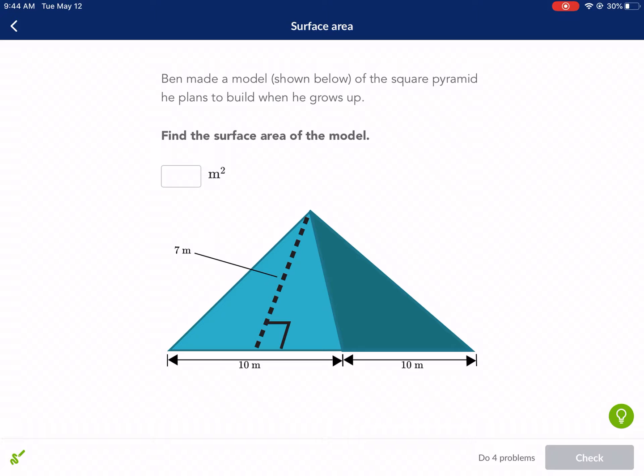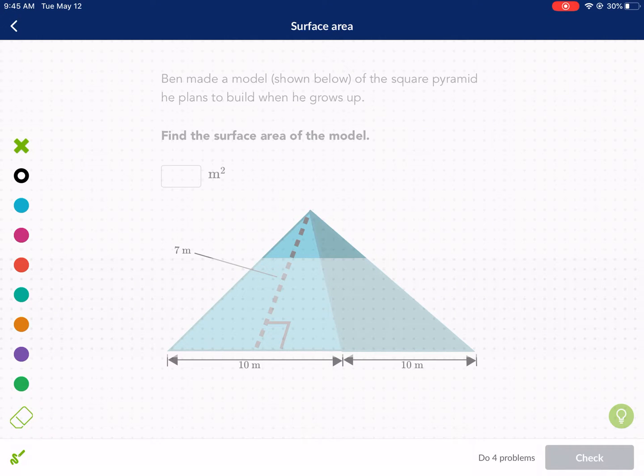It says Ben made a model shown below of the square pyramid he plans to build when he grows up. There's a lot of things wrong with that statement already. So why is Ben making a model and why does he want to build a pyramid when he grows up? Anyway, his model is kind of suspect. He says it's a square pyramid, but it's not really drawn well. So I'm going to go ahead and redraw this for you so you have a little bit more perspective.